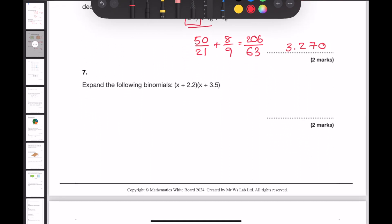Question 7. Expand the following binomials. Now when we expand we multiply everything in the second bracket by everything in the first. So multiplying everything by x would give me x squared plus 3.5x. The next bit is 2.2 times x and this gives me 2.2x and finally 2.2 times by 3.5. This gives 7.7. Now collect any like terms. Here I can see 3.5x and 2.2x simplifies to give the result of x squared plus 5.7x add 7.7.